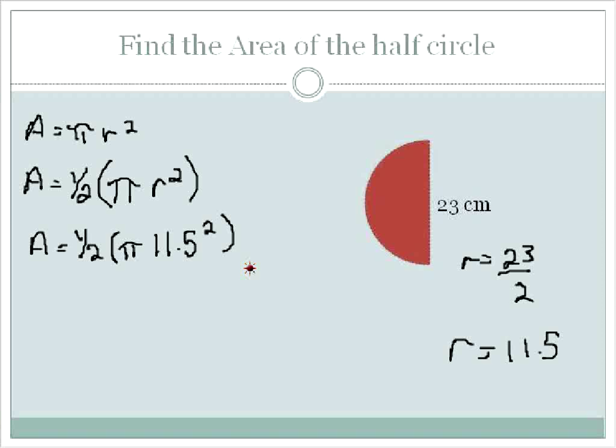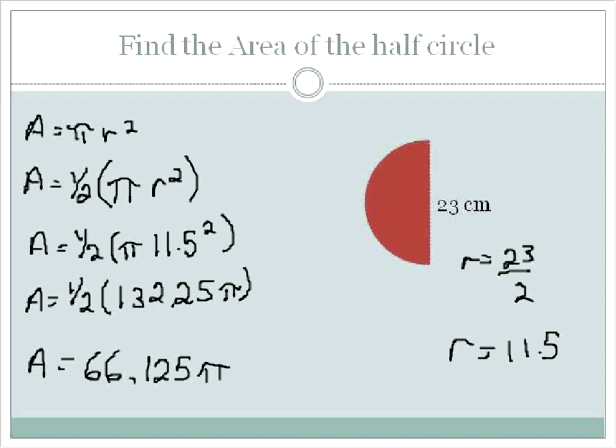So 1 half of pi times 11.5 squared. 11.5 squared is equal to 132.25. And so we can divide it by 2 first, and then that will give us our exact area is 66.125 pi centimeters squared. And we did that by finding half of this number. Half of 132.25 is 66.125.